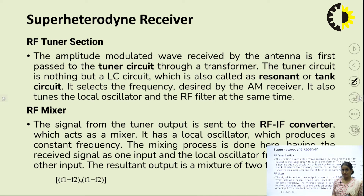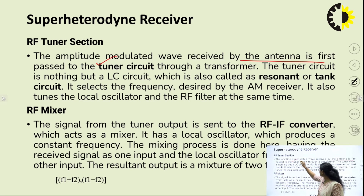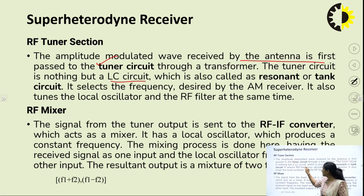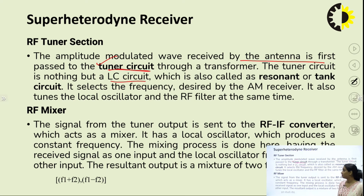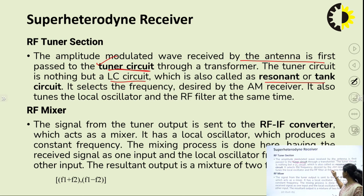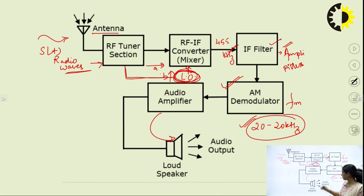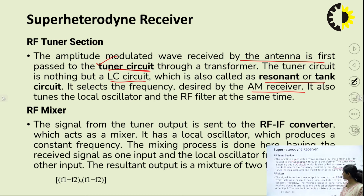Looking at the RF tuner section: the amplitude modulated wave received by the antenna is first passed to the tuner circuit through a transformer. The tuner circuit is an LC combination, also called a resonant or tank circuit, which selects the frequency desired by the AM receiver. It also simultaneously tunes the local oscillator and the RF filter.